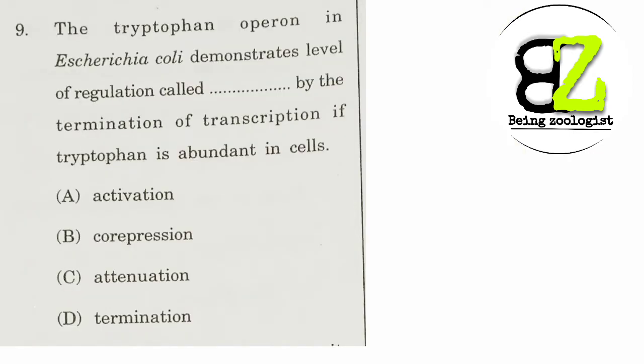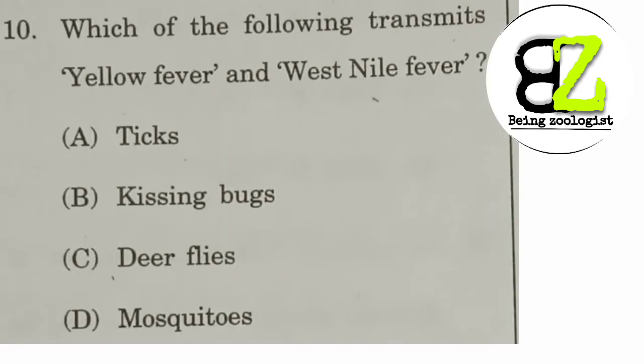Next question: the tryptophan operon in E. coli demonstrates a level of regulation called blank, by the termination of transcription when tryptophan is abundant in the cell. The answer is attenuation — because we know termination of transcription takes place by the attenuation process. So option C is the correct answer.